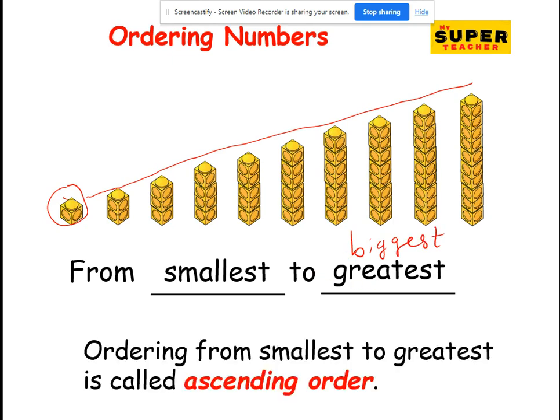Ordering from smallest to greatest is called ascending order. When you're ordering in ascending order, when you're ordering from smallest, the numbers get bigger.